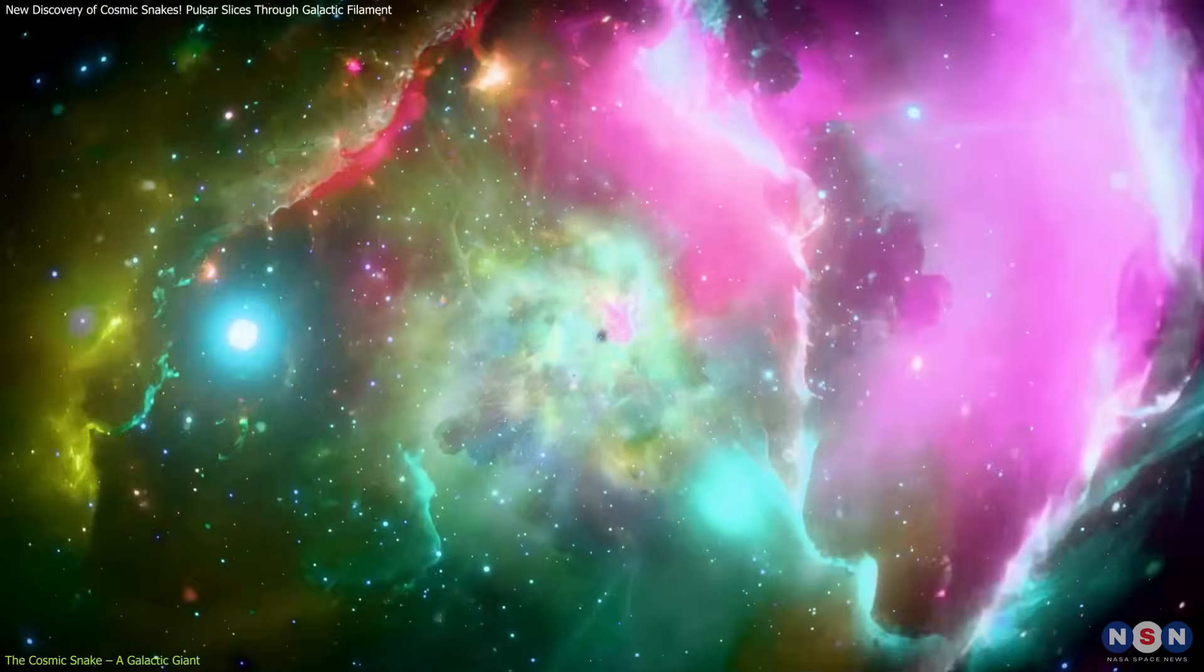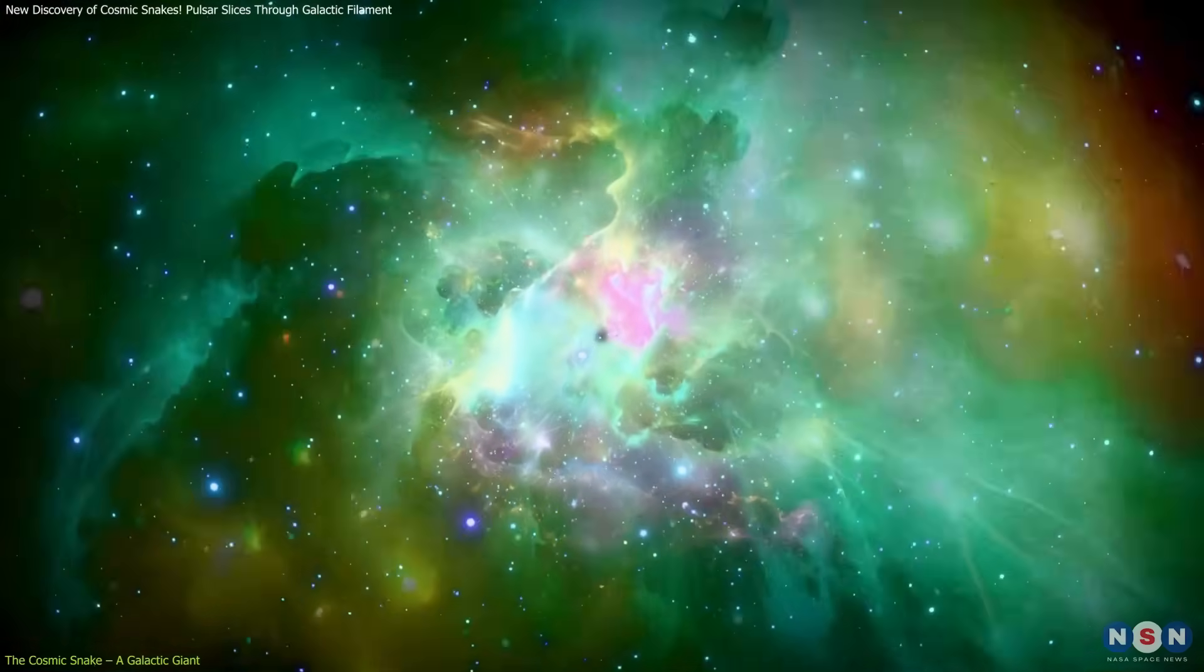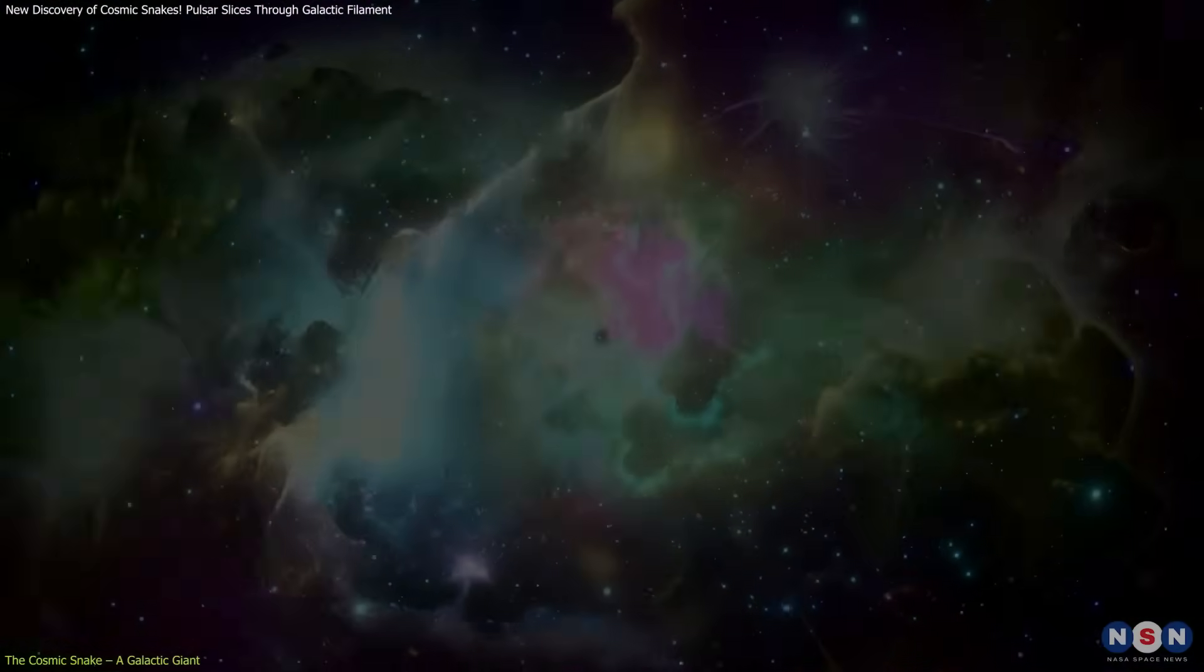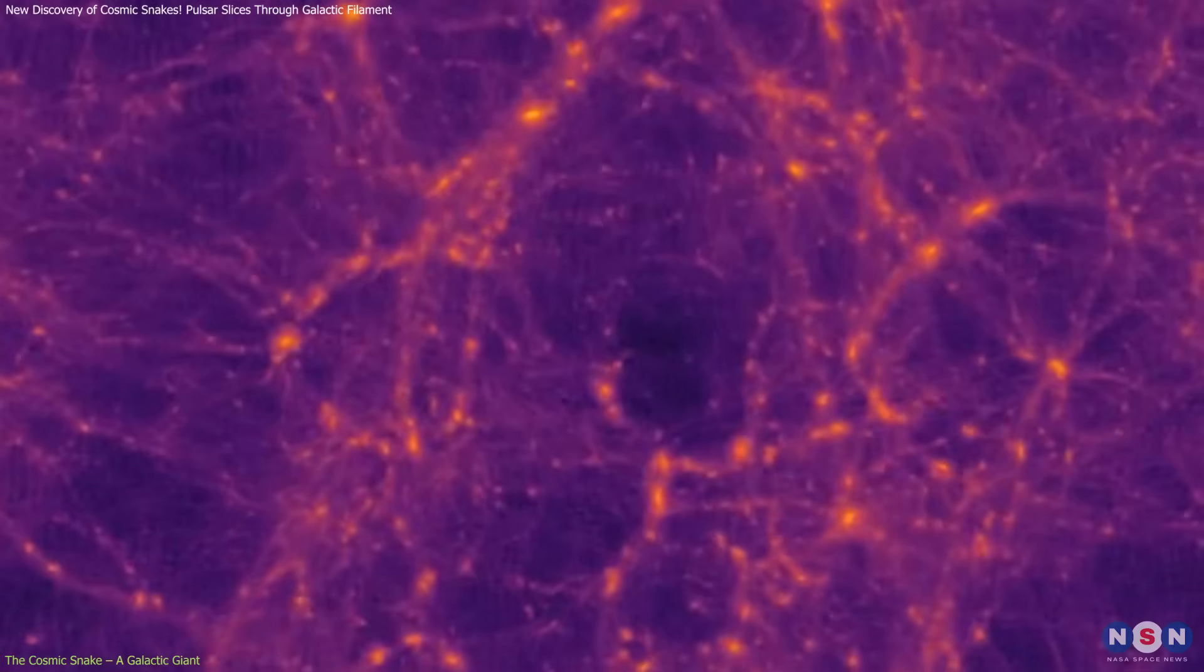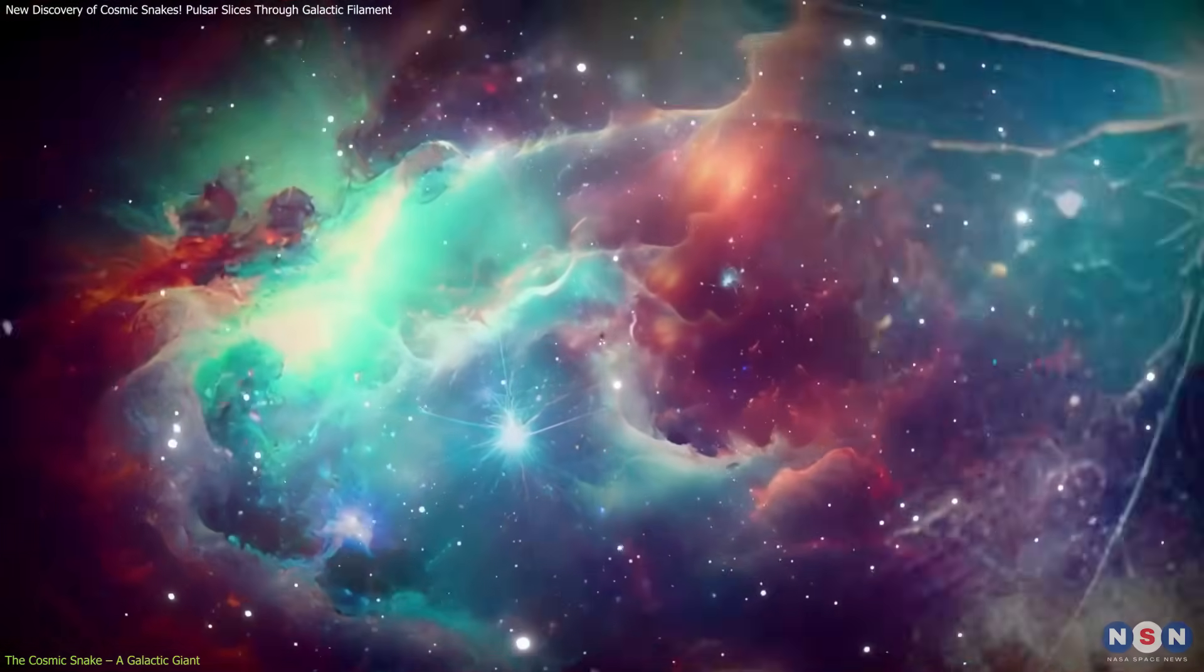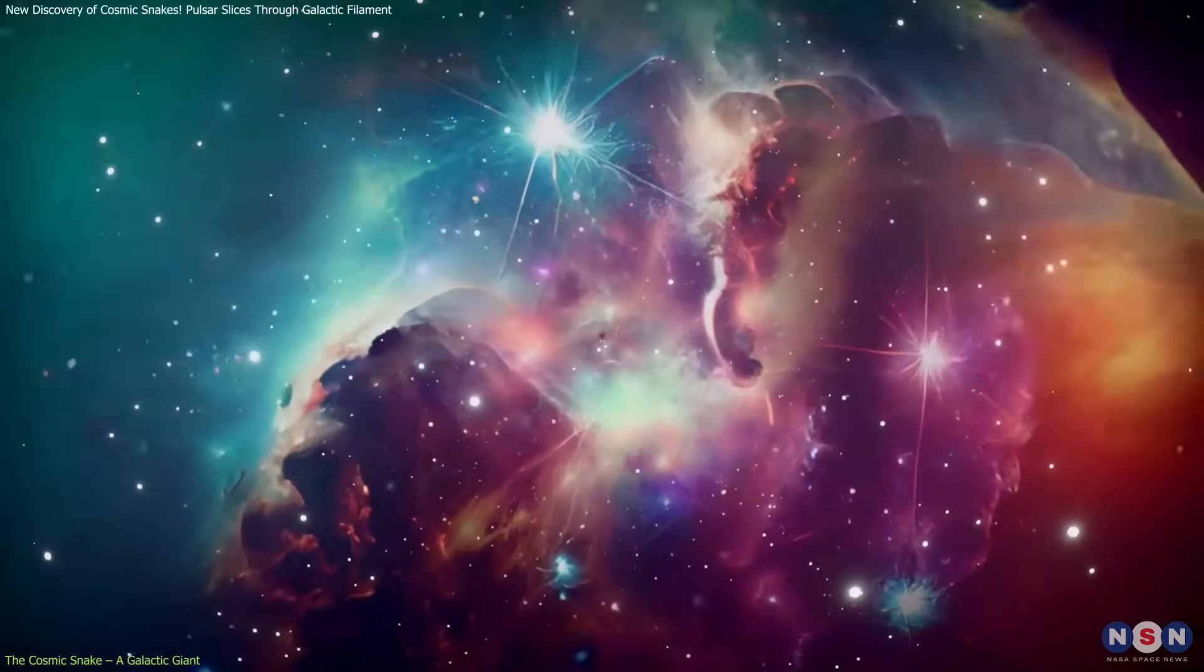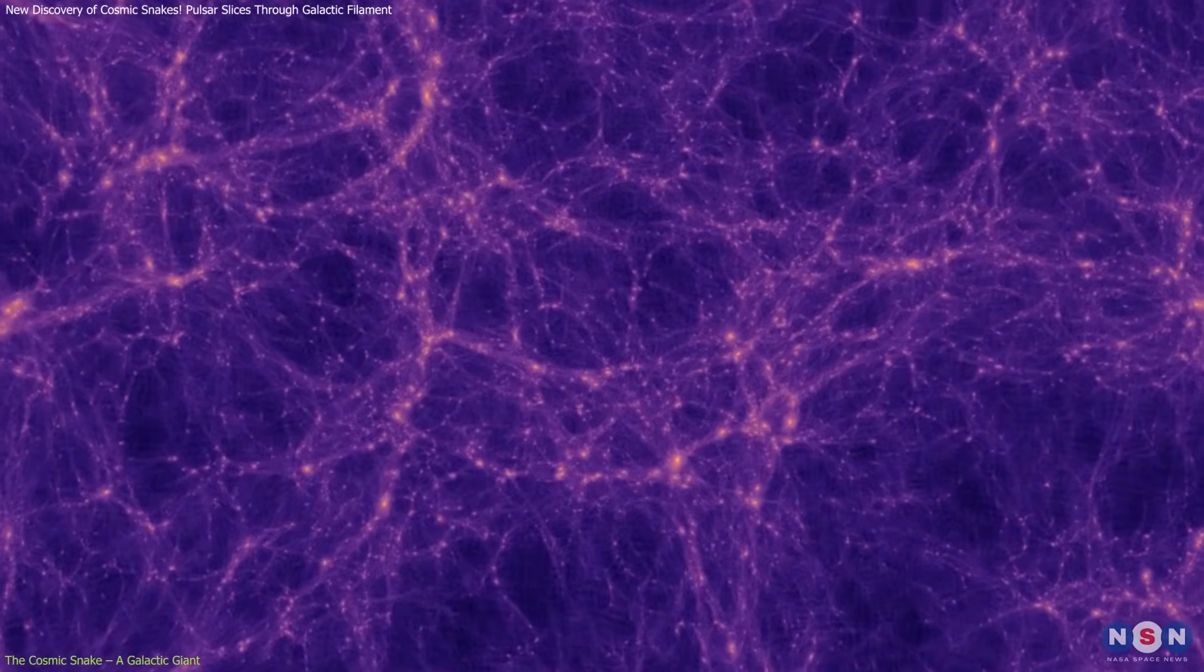The interstellar medium (ISM), a complex mix of gas, dust, and cosmic rays, is the environment through which these filaments stretch. The structure and conditions of the ISM, such as its temperature, density, and embedded magnetic fields, shape the way filaments behave and evolve.